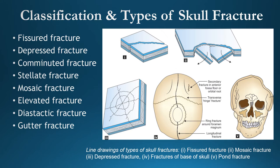Elevated fracture is one wherein one end of the fractured fragment is elevated above the skull surface while the other end dips into the cranial cavity, directly injuring the dura mater; caused by a moderately heavy sharp-edged weapon like an axe. Diastatic fracture occurs along skull sutures and is most common in children and young persons. Gutter fracture affects the thickness of the skull bone, leading to irregular depressive fracture of the inner table; a glancing bullet wound is a common cause.